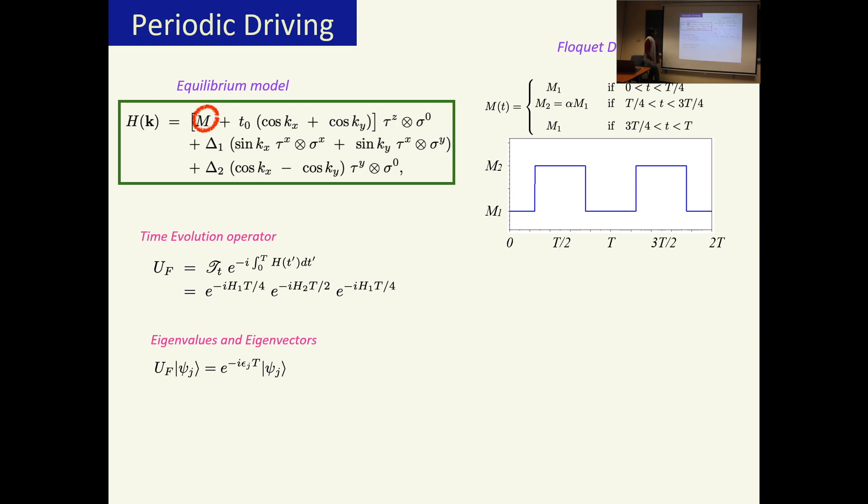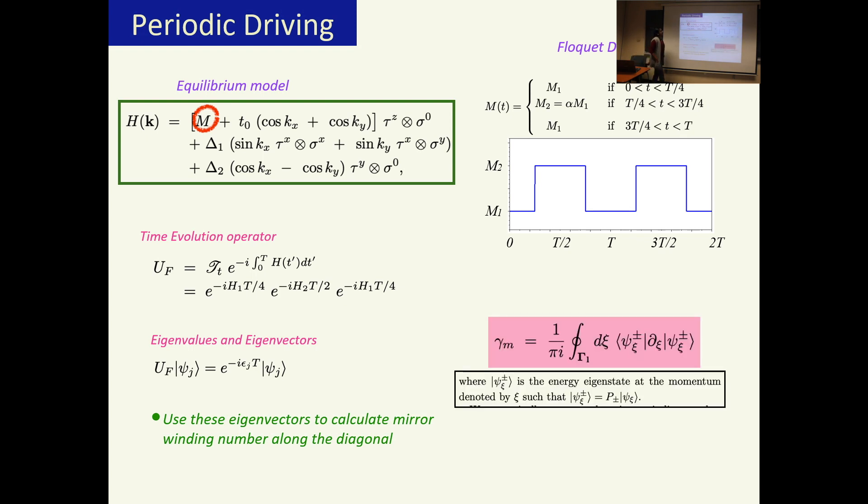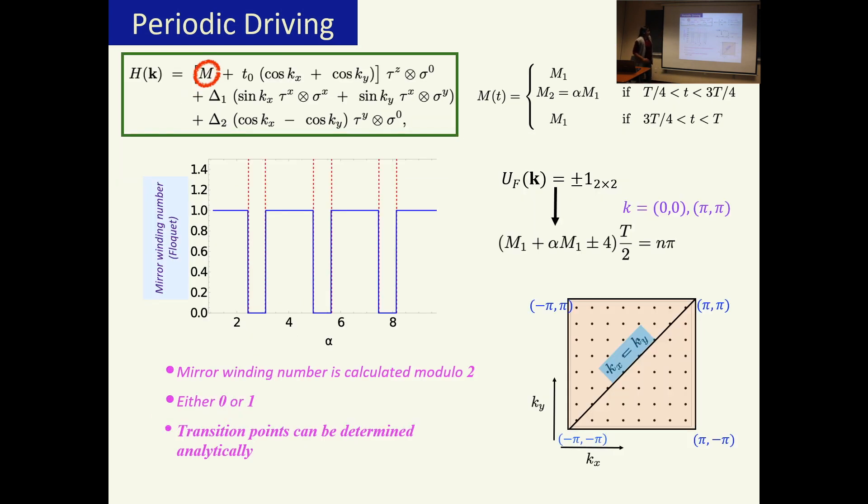The time evolution operator for this is given by that. So for the first one fourth of the cycle I have H1, for the next half it is H2, and the last one fourth it is H1. We calculate the eigenvalues and eigenvectors of this time evolution operator, and using these eigenvectors we calculate the mirror winding number along the diagonal which we talked about earlier. If we do this calculation numerically, we find in some parameter regime the mirror winding number is 1 and for other parameter regime it is 0.